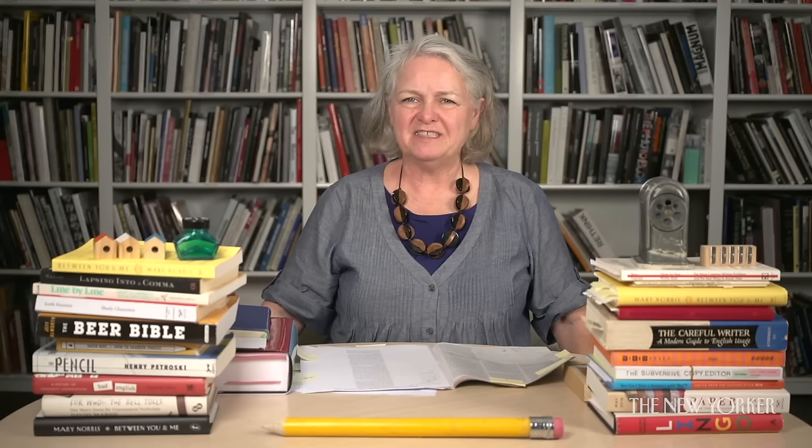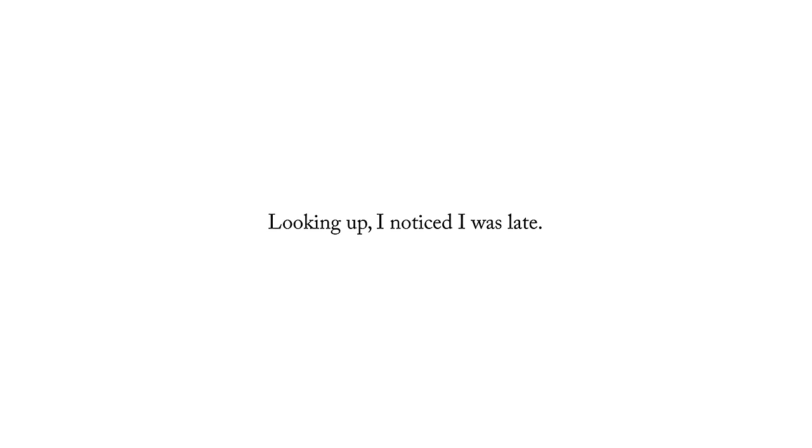Now we're going to tackle the dangling participle. A participle is the form of the verb that has -ing on the end of it. And when you begin a sentence with a participle, that phrase has to modify the subject of the sentence. For instance, 'looking up, I noticed I was late.' That's an example of a well-formed sentence using a participle — 'looking up' modifies the subject of the sentence: I.